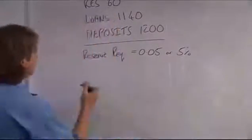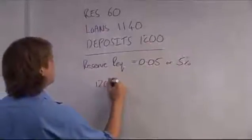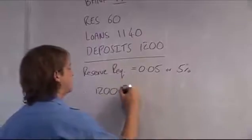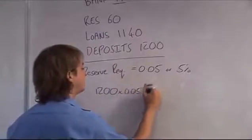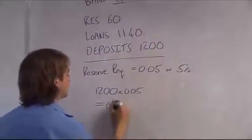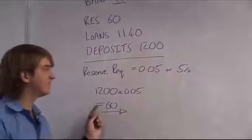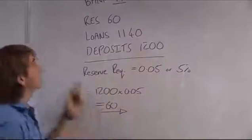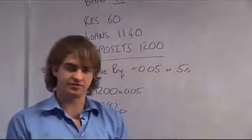Let's check: your deposit is 1,200, and to have a reserve requirement of 5%, you multiply that by 0.05, which equals 60. The required reserves are exactly 60, and your actual reserves are 60, so your reserve requirement is perfect.